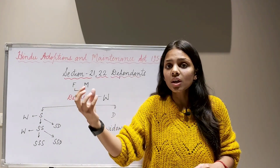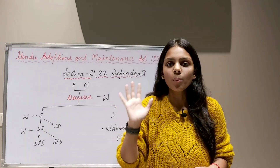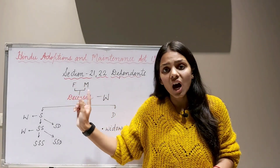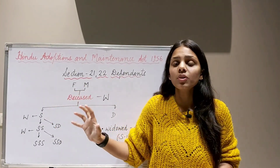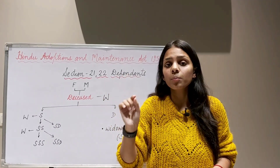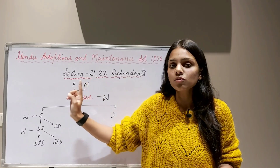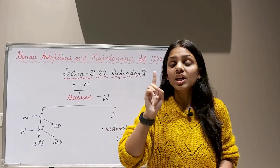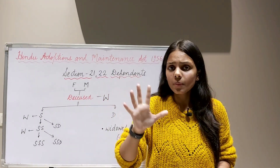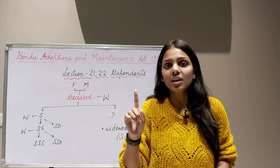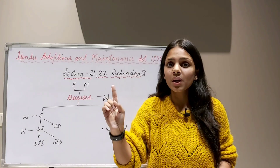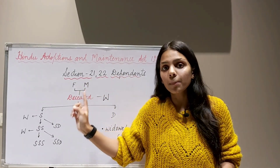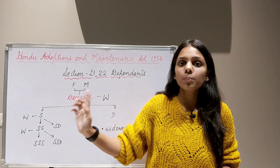Dependents are certain relatives of a deceased Hindu who claim maintenance out of his estate, which is now in the hands of the legal heirs. Legal heirs are not personally obliged whatsoever to maintain his relatives — there is no personal obligation. They will maintain his relatives out of the estate which they have inherited, and legal heirs are legally bound to do so. With rights come obligations: if you have inherited property, you must maintain the dependents.